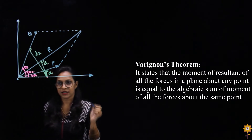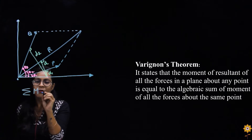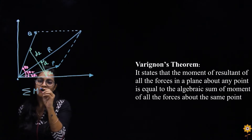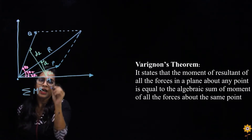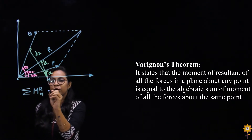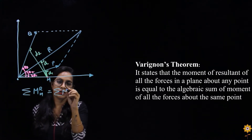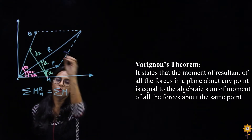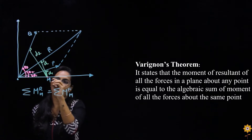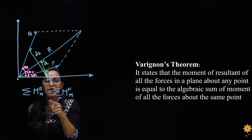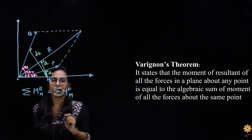So according to the statement of Varignon's theorem, the moment of the resultant force about a point — let's say point M — would be equal to the algebraic sum of the moments of all the forces about that same point M. That is, the resultant force equals the summation of all the forces present in the current plane.